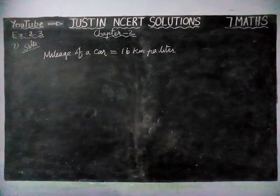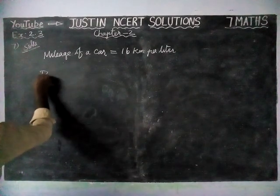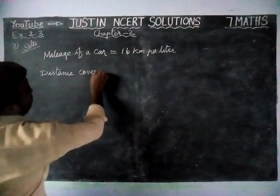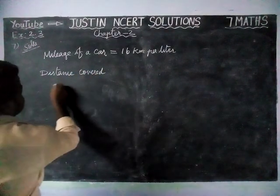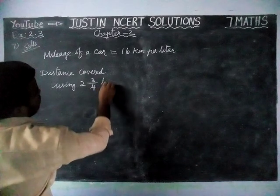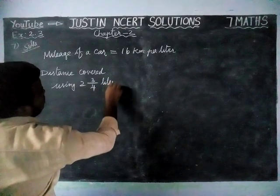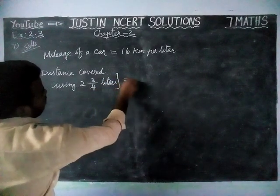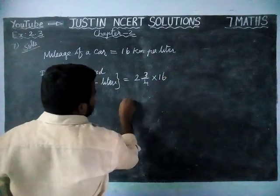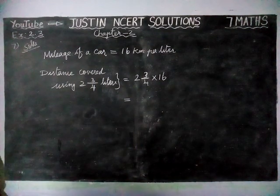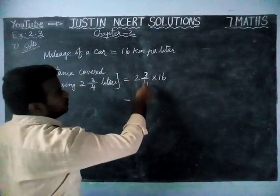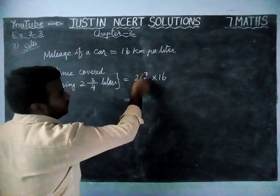Now they ask us to find the distance covered. Distance covered using 2 and 3 by 4 litres is equal to 2 and 3 by 4 into 16. This is 2 and 3 by 4 in mixed fraction; we have to convert it into improper. So we have to multiply the whole part with the denominator, then add it with the numerator.